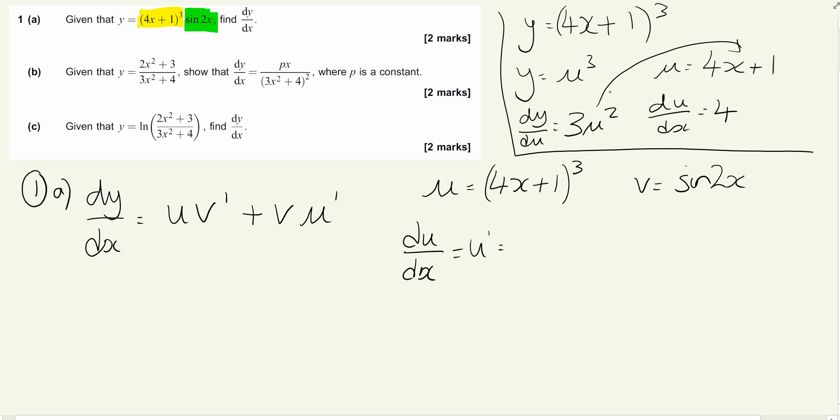The solution for u' is going to be 12(4x + 1)². That's the differential of this one. Some of you might be able to do that without writing out the chain rule, but if you need to, there's nothing wrong with it. It's just the fact that we tend to use the variable u, which makes this slightly more confusing.